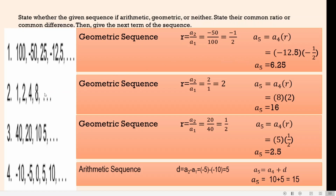For number 2, we have 1, 2, 4, 8, and so on. The common ratio is A sub 2 over A sub 1, which is 2 divided by 1. 2 divided by 1 is 2. Therefore, our common ratio is 2, so this is a geometric sequence. To get the next term, we have A sub 4 times the common ratio. We're going to multiply 8 and 2. 8 times 2 is equal to 16. Therefore, the next term is 16.